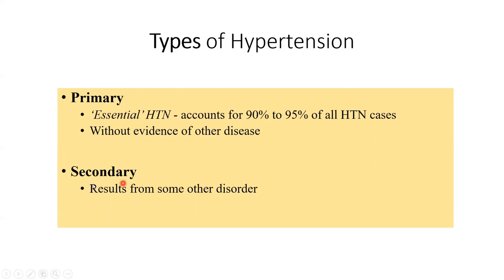Another very famous trigger for secondary hypertension is kidney disease. Kidney disease is a whole set of issues with the kidney, and hypertension is one of the well-known side effects of kidney disease. That is typically discussed under secondary hypertension.